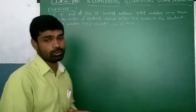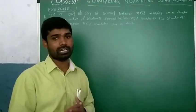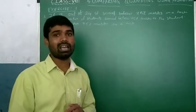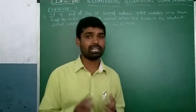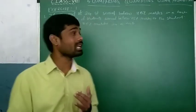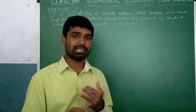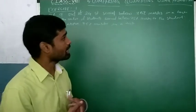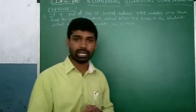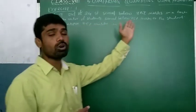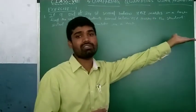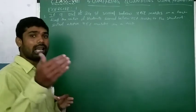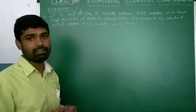Here, if 9 out of 24 students scored below 75% marks in a test — meaning the total number of students is 24, and 9 of them scored less than 75%. The remaining students got above 75% marks. The question asks us to find the ratio of students who scored below 75% to those who scored above 75%.